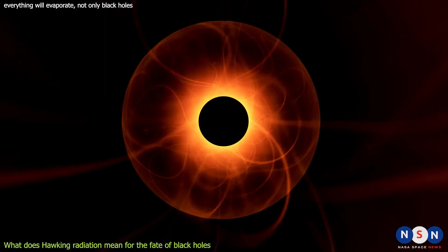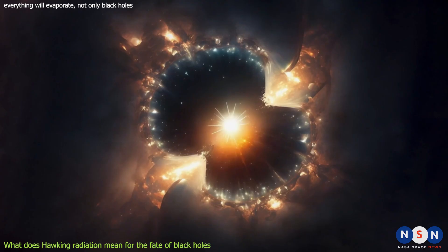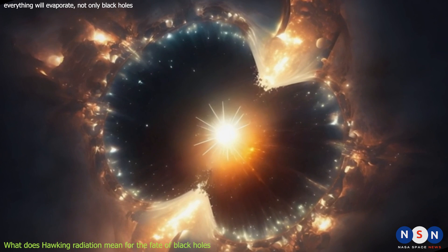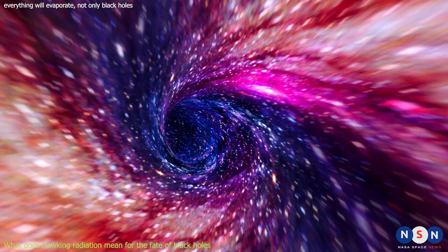The time it takes for a black hole to evaporate depends on its initial mass. For example, a black hole with the mass of the sun would take about 10 to the power of 67 years to evaporate, which is much longer than the age of the universe. However, a micro black hole with the mass of a car would take only about 10 to the power of negative 23 seconds to evaporate.